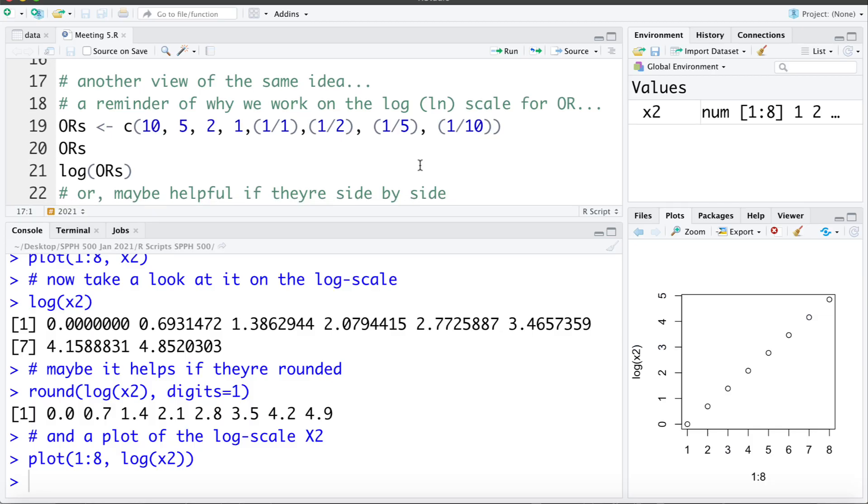Now I want to take a look at one more example of the same idea and here we want to look at again why we're going to work with the odds ratio on the log scale. So here I've created some odds ratios and what I want to show you is the odds ratio of 10 and the odds ratio of 1 tenth in some ways we can think of as being similar. If the exposed have 10 times the odds of disease than the unexposed, the unexposed have 1 tenth of the odds of disease than the exposed.